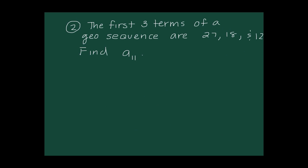The next problem says the first three terms of a geometric sequence are 27, 18, and 12 — find a sub 11. Since it explicitly says geometric, I'm using the formula a sub n equals a sub 1 times r to the (n minus 1) power. The ratio is 18 over 27, which reduces to two-thirds. Checking: 18 times two-thirds is 12. So I have 27 times (two-thirds) to the 10th power.